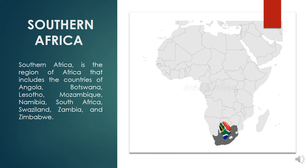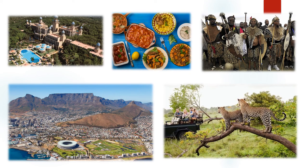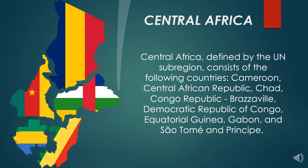Southern Africa is the region that includes the countries of Angola, Botswana, Lesotho, Mozambique, Namibia, South Africa, Swaziland, Zambia, and Zimbabwe. Central Africa, as defined by the UN sub-region, consists of the following countries: Cameroon, Central African Republic, Chad, Congo Republic (Brazzaville), Democratic Republic of Congo, Equatorial Guinea, Gabon, and São Tomé and Príncipe.